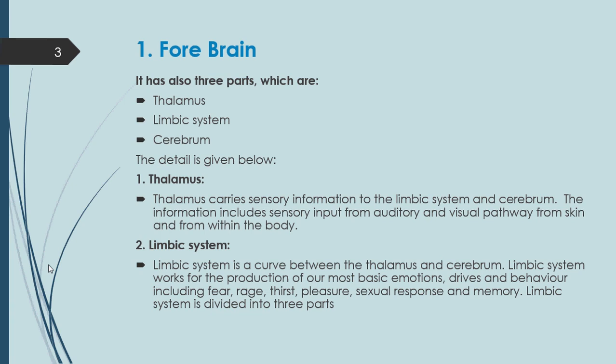Thalamus conveys information to the limbic system and cerebrum. The information includes sensory input from auditory and visual pathways, from skin, and from within the body — so all sensory information from listening, vision, and the body is relayed by the thalamus.